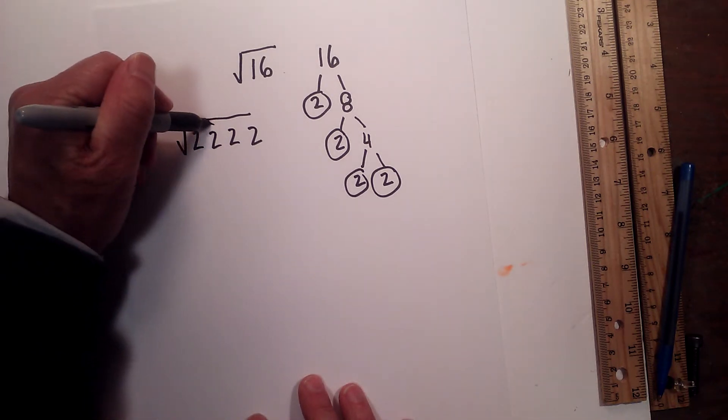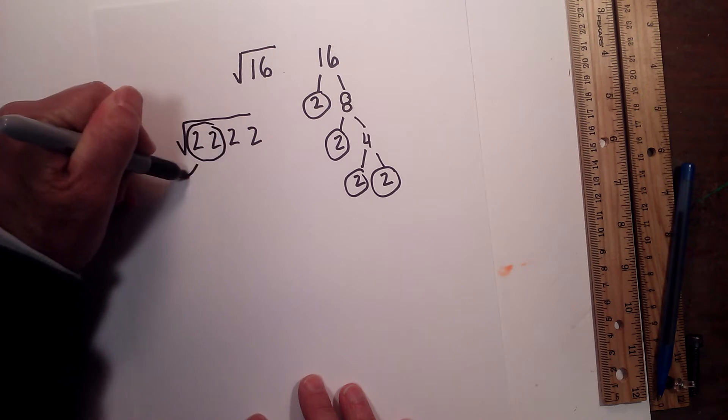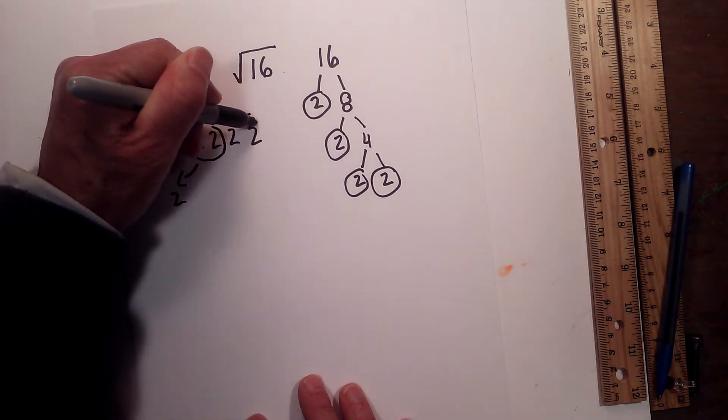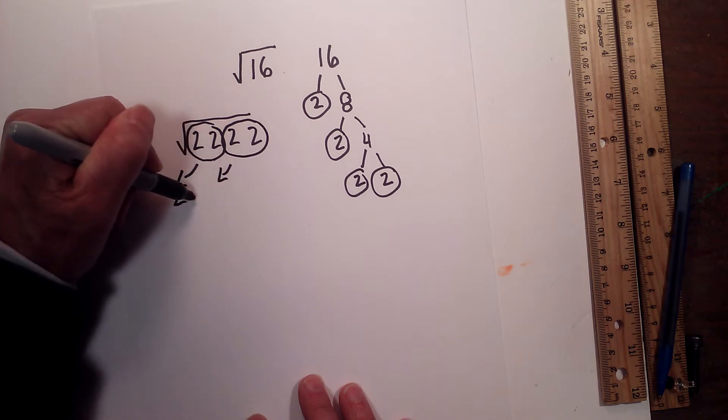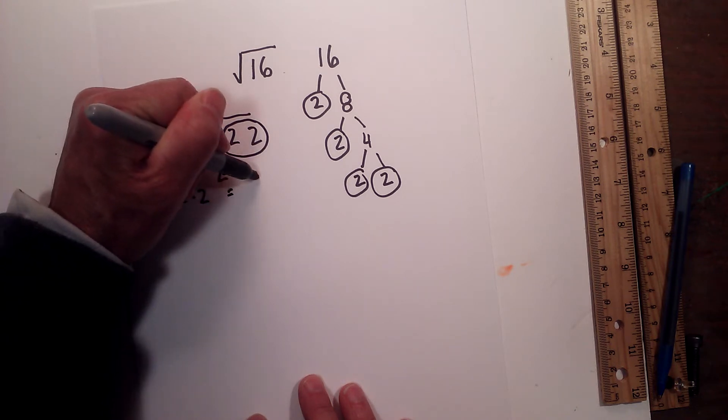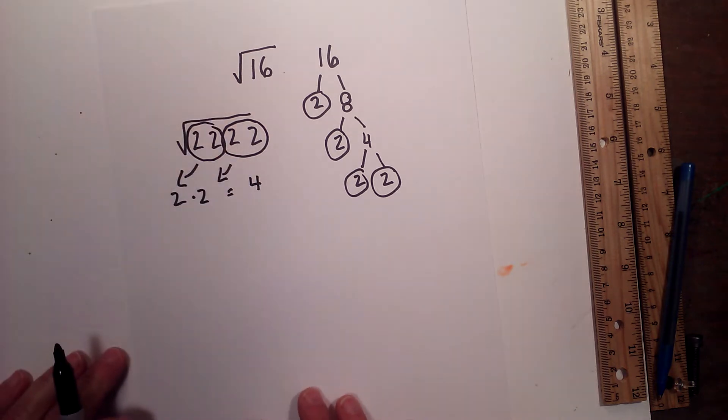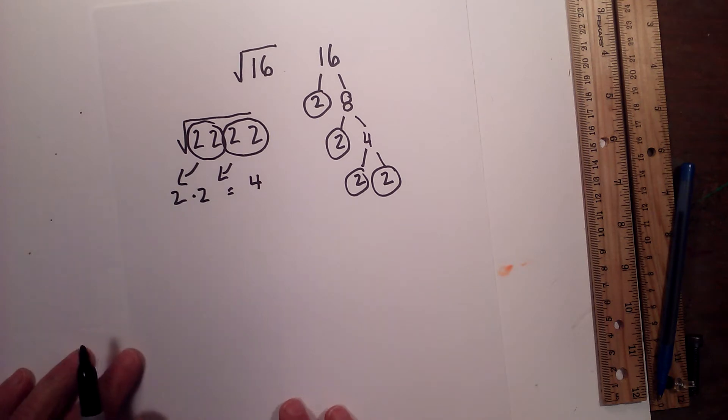So I have one pair, so I'm going to write a 2 here, and another pair, write this 2 here, and 2 times 2 is 4. So the square root of 16 is 4.